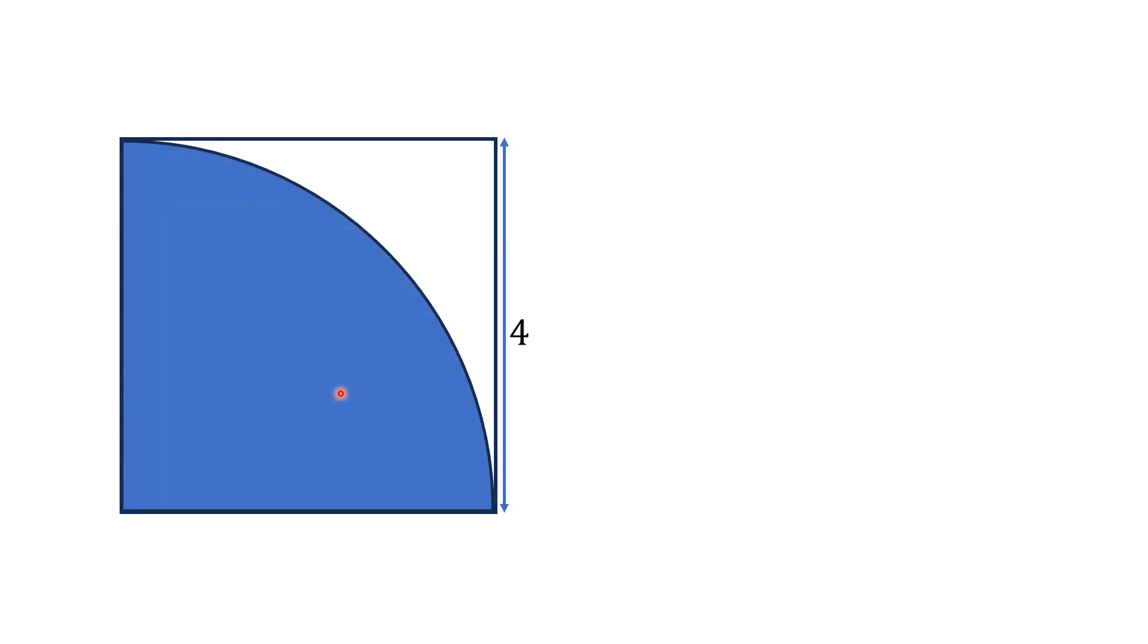Hello everyone, in this video we have a square with side length equal to four units. A quarter circle is inscribed in this square with its radius equal to the side of this square, that is four units.